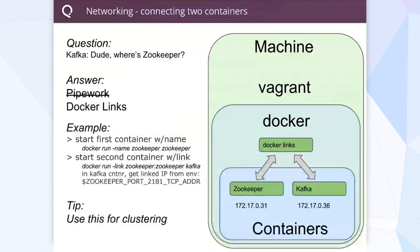With Docker links, make sure you name the container first, and then you can take that name and attach it with a link. Now those two containers know about each other, which is fantastic. We're also planning to use links to create clusters of containers — that's a great thing to keep an eye on if you haven't played with them yet.